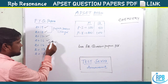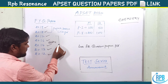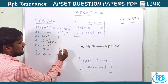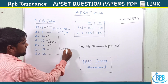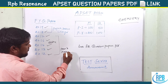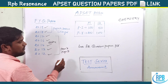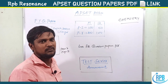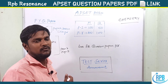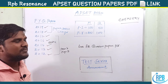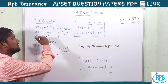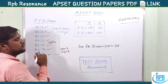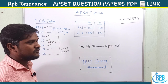For previous year question papers up to 2017, the pattern included paper two and paper three — two papers. Paper two had around 50 to 75 questions, 100 marks, and paper three was 150 marks.